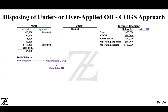This T-account provides the actual side and applied side. The actual side shows $115,000 of actual amount incurred during the period, and the applied side shows $110,000 applied during the period. Subtracting $110,000 from $115,000 gives you a $5,000 debit balance, which means that you underapplied the overhead. When you underapply overhead, you basically understate cost of goods sold and overstate operating income.